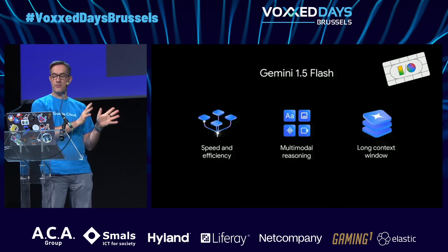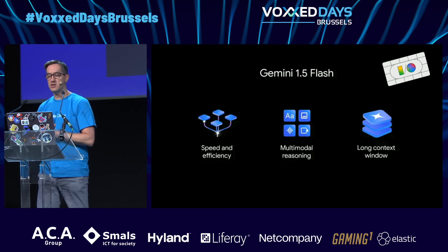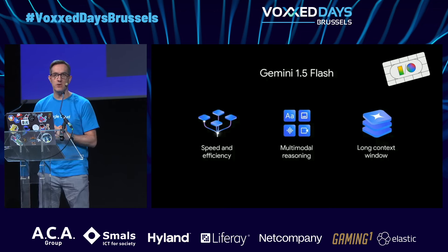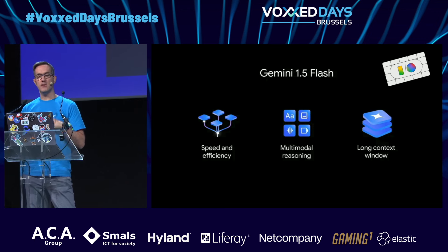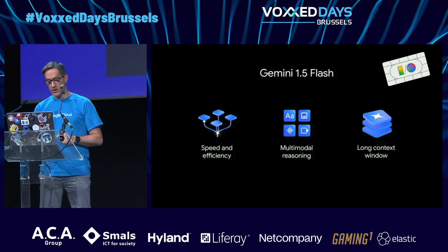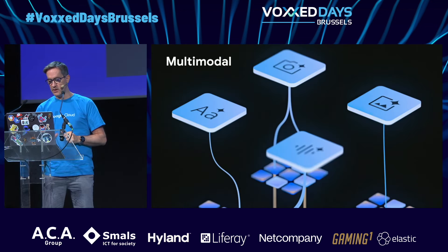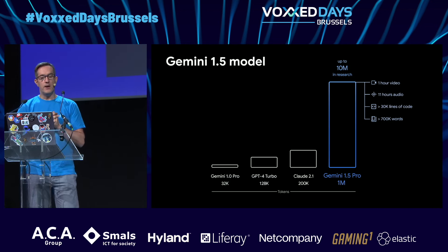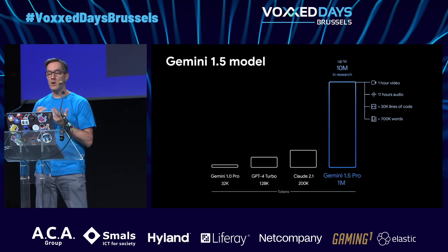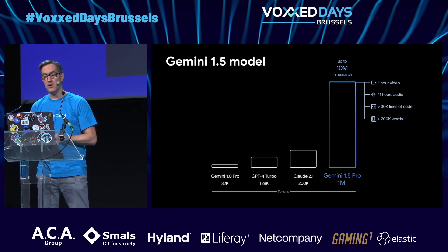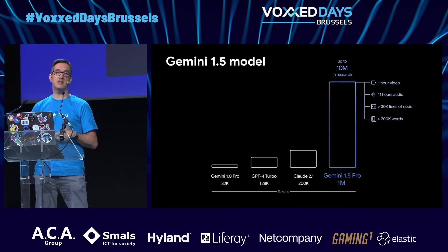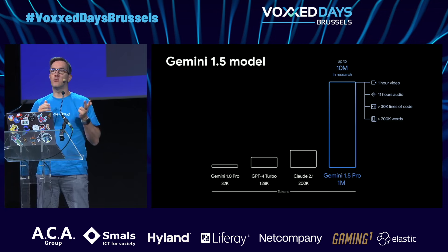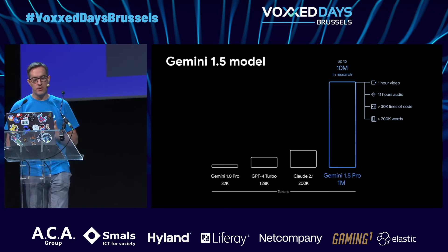Both 1.5 Pro and 1.5 Flash support a long context window of one million tokens — the biggest you can find on the market. There's a waitlist to try two million tokens. One million tokens represents one hour of video, 11 hours of audio, 30,000 lines of code. You can often feed your whole project and reason about it.